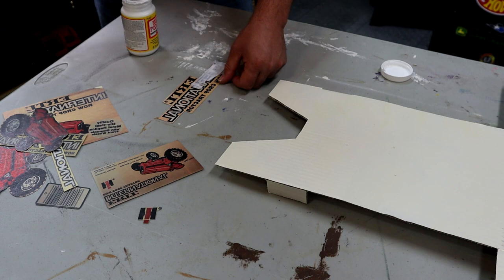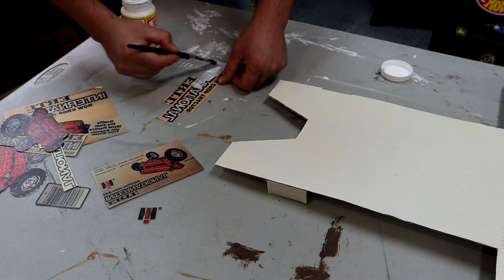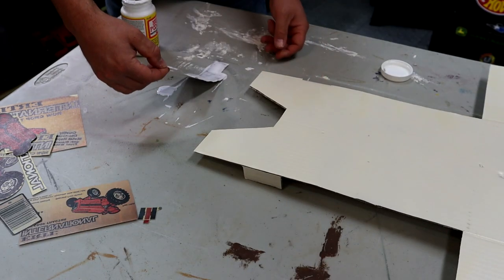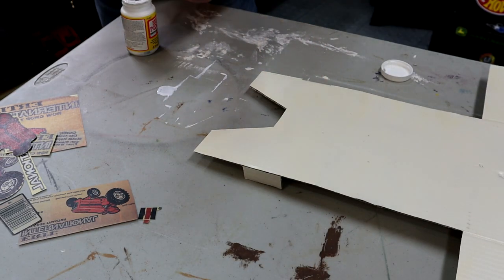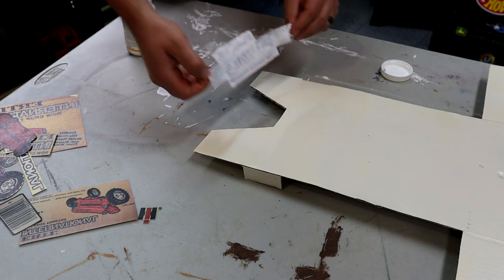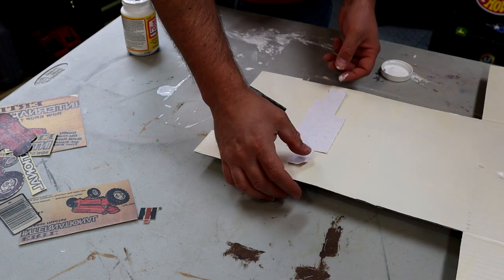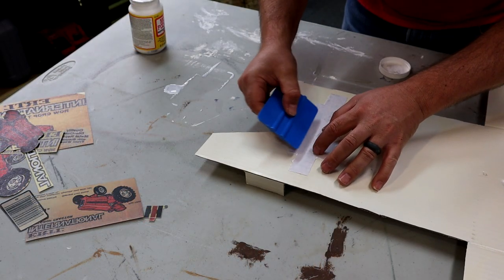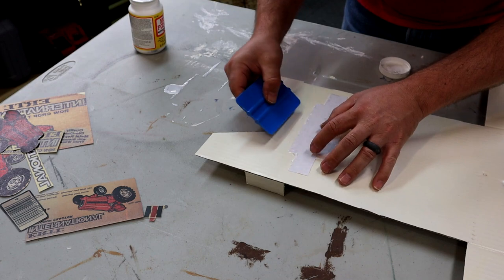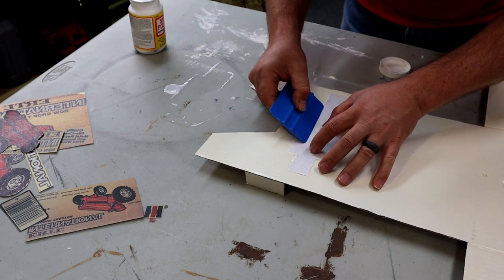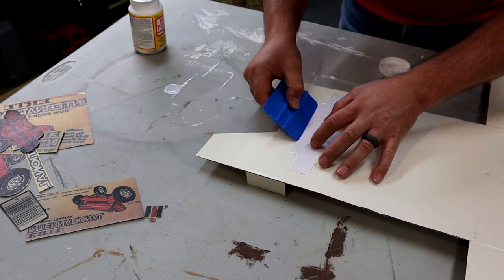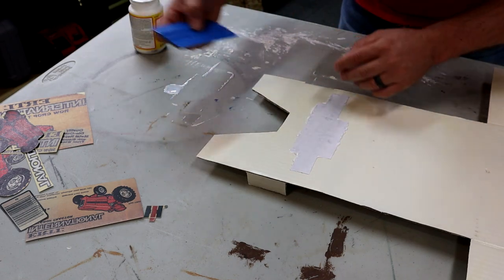And then we used some Mod Podge and put it on fairly thick, and then positioned the graphics where they ought to go on the box. And then we can use something flat to kind of press out the glue. But you want a nice even coat, a fairly thick coat, because you don't want any air bubbles under there for this technique. And then we have to wait almost 24 hours for this to fully cure, and then we can reveal the graphics below.